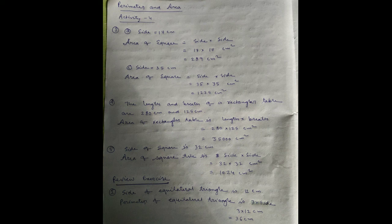...280 centimeter and 125 centimeter. Area of rectangular table is length into breadth, equal to 280 into 125 centimeter square, equal to 35,000 centimeter square.